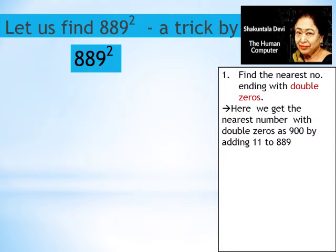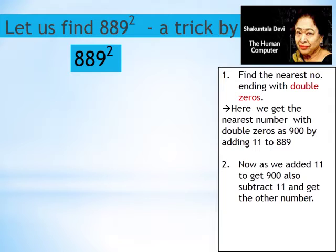So by adding 11 we get the number 900. Now let us find the number by subtracting 11 from 889. So we get the number 878.